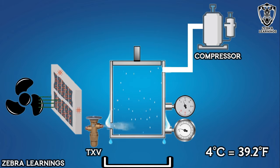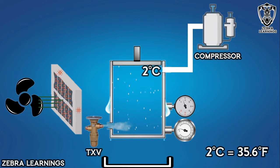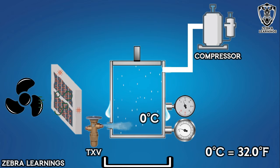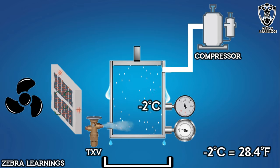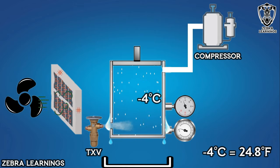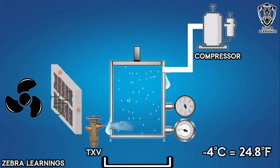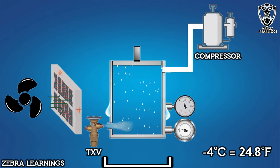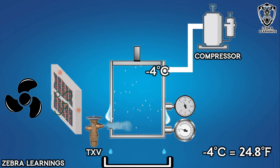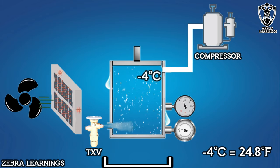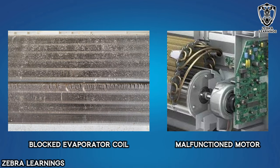As this continues, the temperature of the refrigerant coming from the expansion valve decreases, and enters the evaporator coil at minus temperature. When the temperature of the evaporator coil goes to minus, as we have already said, the water freezes and forms ice all over the evaporator coil. In the same concept, if the evaporator coil is blocked, or the blower fan is not working, air cannot flow, so the temperature of refrigerant will decrease and the evaporator coil will freeze.